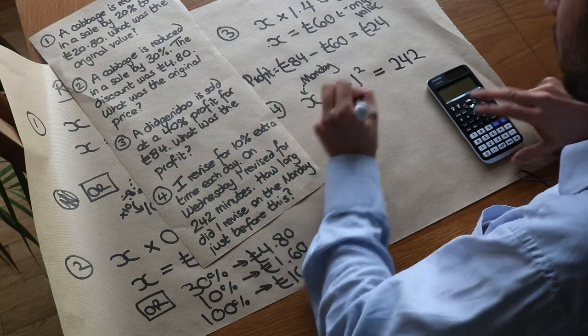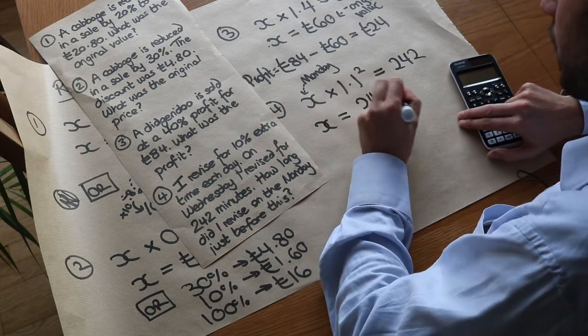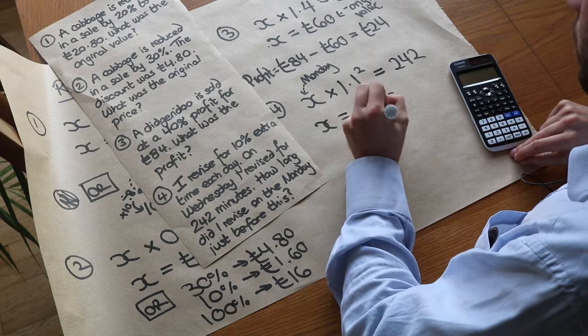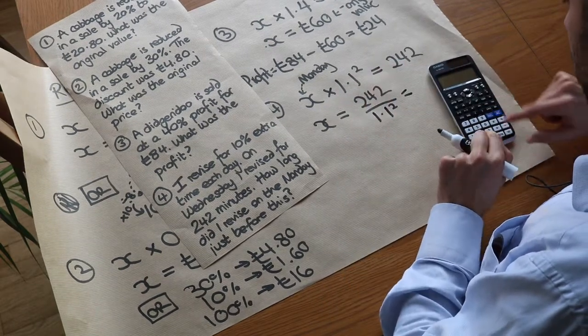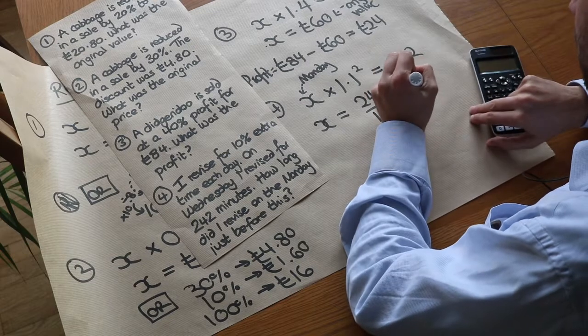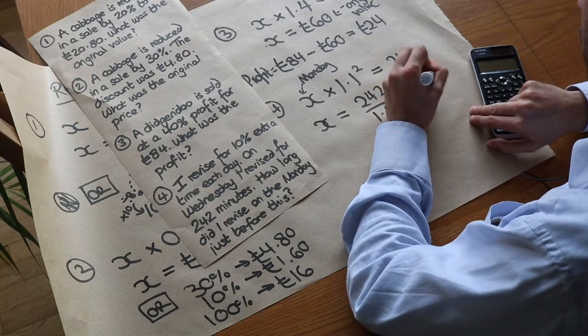So we do just what we did before. We do 242 divided by all of 1.1 squared. So we do 242 divided by 1.1 squared and that gives us 200 minutes.